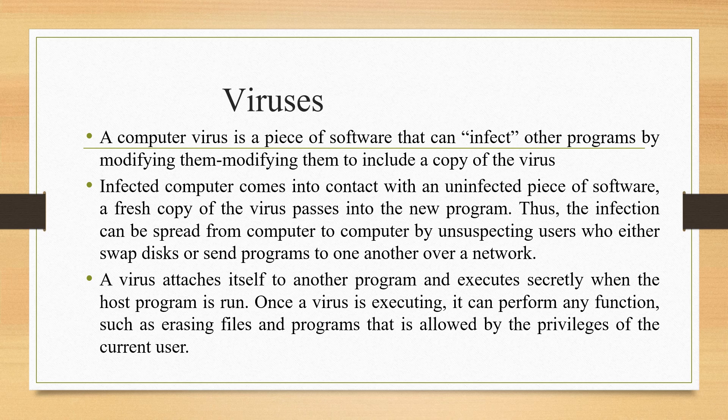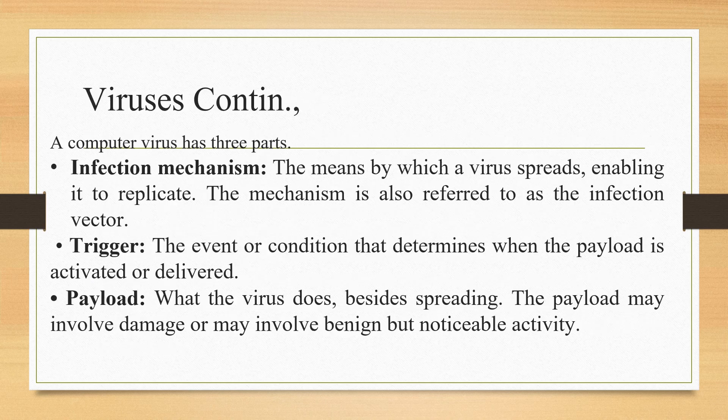A virus is a piece of software that can infect other programs by modifying them to include a copy of itself. When an infected computer comes into contact with an uninfected piece of software, a fresh copy of the virus passes into the new program, spreading the infection from computer to computer via users who swap disks or send programs over a network. The virus attaches itself to another program and executes secretly when the host program is run. Once executed, it can perform any function allowed by the privileges of the current user. There are three parts to a computer virus: the infection mechanism, the trigger, and the payload.